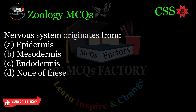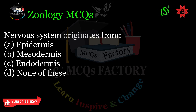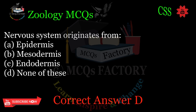The nervous system originates from: A. Epidermis. B. Mesodermis. C. Endodermis. D. None of these. Correct answer: D.